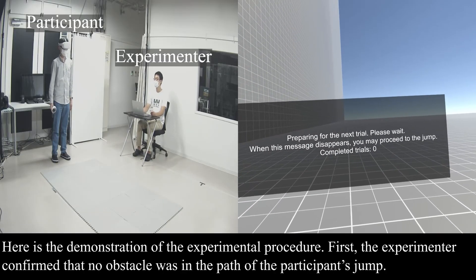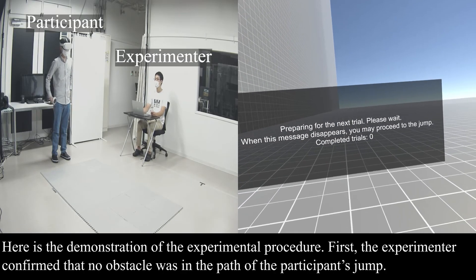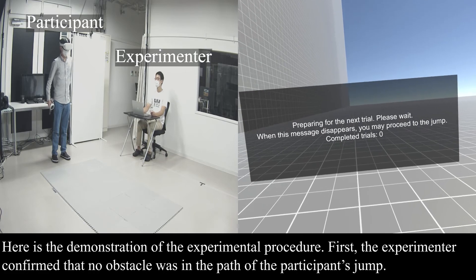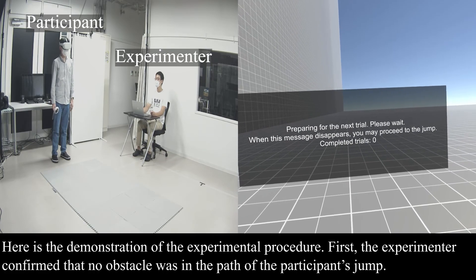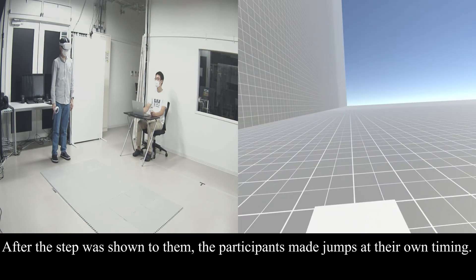Here is the demonstration of the experimental procedure. First, the experimenter confirmed that no obstacle was in the path of the participant's jump. After the step was shown to them, the participants made jumps at their own timing.